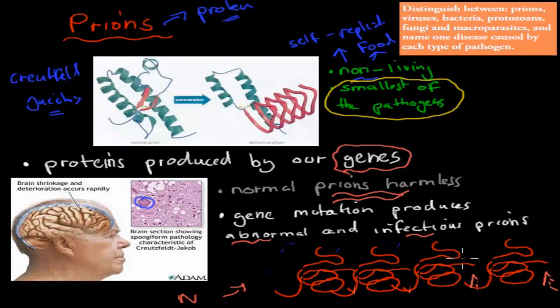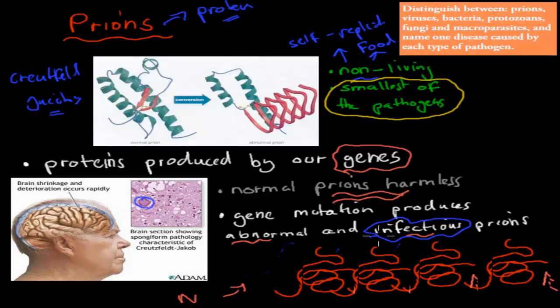Creutzfeldt-Jakob disease can cause paralysis and deterioration of normal behavior — it's quite a severe disease. And it can actually be transmitted from person to person. But in most cases, if you have one of the infectious prions in your body, then you have a risk of the other ones turning infectious as well.